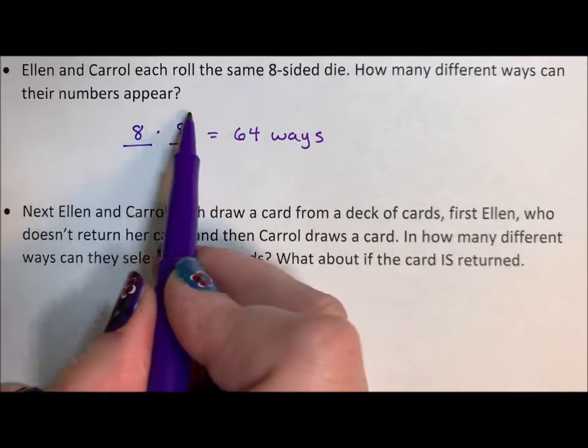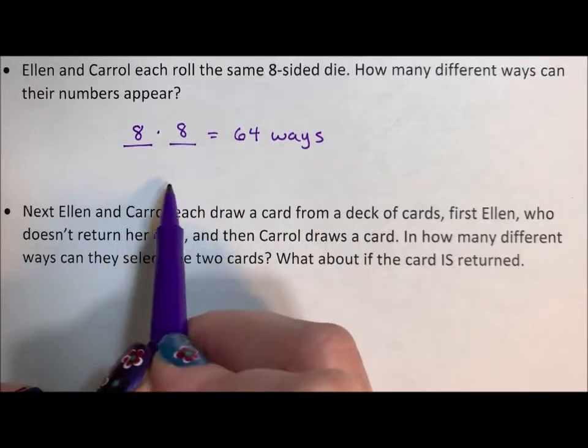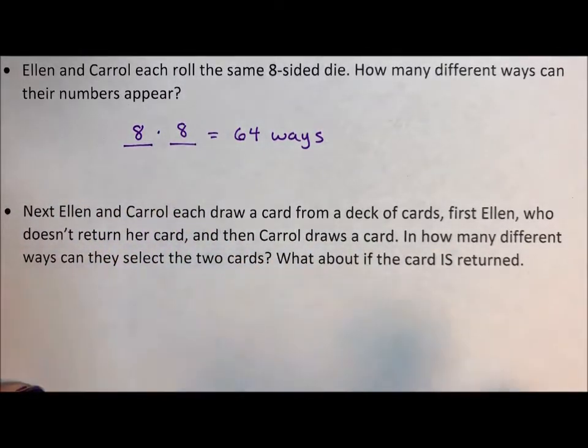It can be 1,1, 1,2, 1,3, 1,4, up to 1,8, then 2,1 to 2,8, 3,1 to 3,8. We could make a tree, it would get big, or a table, but there are 64 ways in which those two die can be rolled.